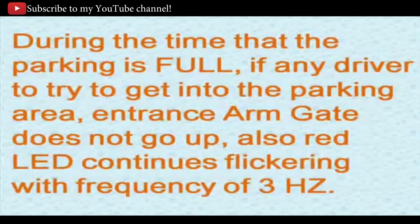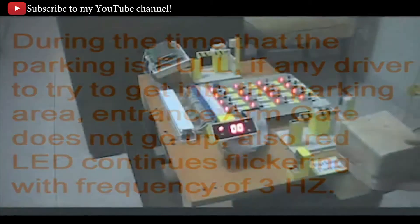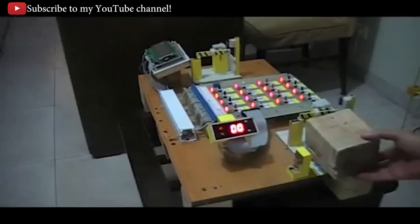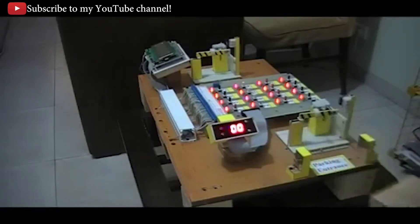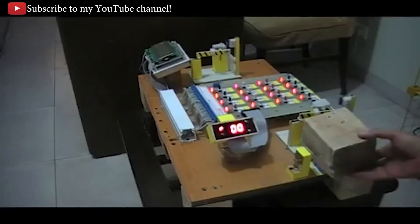During the time that the parking area is full, if any driver tries to get into the parking area, the entrance arm gate does not go up. Also, the red LED continues flickering with a frequency of 3 hertz. Notice when a car is trying to get into the parking area, the arm gate will not go up and the red LED is flickering with a frequency of 3 hertz.